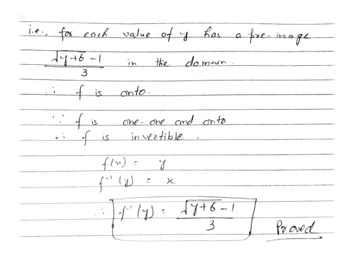Now for the second part, we find f⁻¹(y). Since f(x) = y, we get f⁻¹(y) = x. We already calculated x = (√(y+6) − 1)/3. So f⁻¹(y) = (√(y+6) − 1)/3, which is the required inverse function. Solve this question one, two, three times — as many times as needed — because this is a very, very important question. Pause and note down the solution.